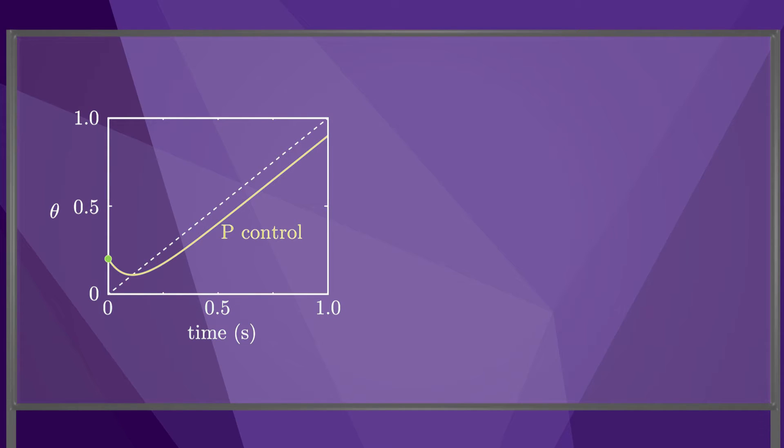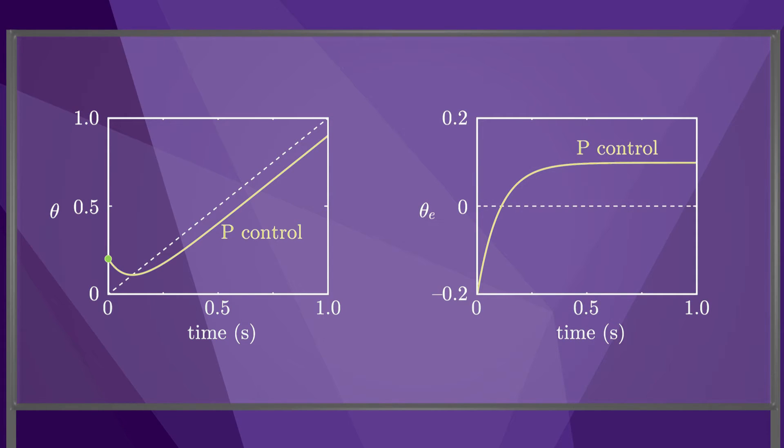The P-controller by itself cannot track the trajectory. In steady state, it always lags behind the desired position by c over Kp, as we calculated earlier. We can also see this in the error response.